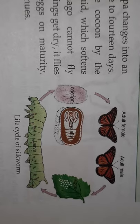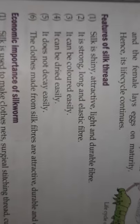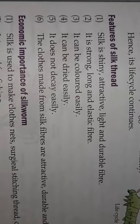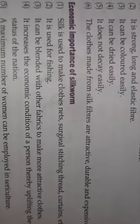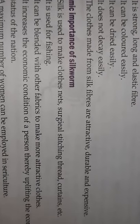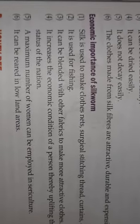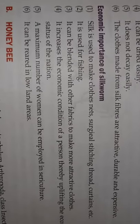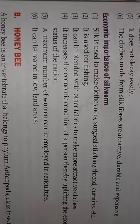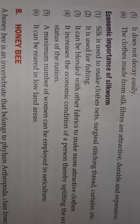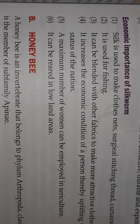You also need to draw the figure of the life cycle of silkworm as given in the book. Regarding features of silk thread: it is a shiny, attractive, light, and durable fiber. It is strong, long, and elastic. It can be colored easily, dried easily, and does not decay easily. Clothes made from silk fiber are attractive, durable, and expensive. Silk can also be blended with other fabrics to make more attractive cloth.